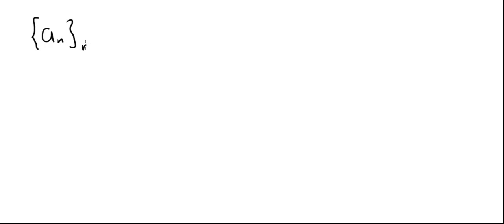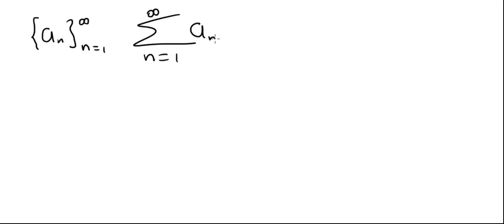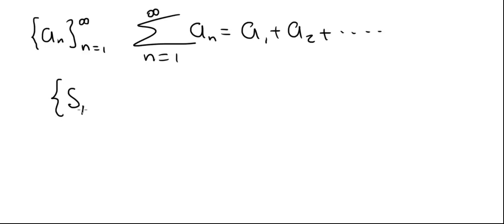We start with a sequence, we call it a sub n, starting at 1 to infinity. We then add up all the terms in this sequence: the summation from n equals 1 to infinity of a sub n, which is a1 plus a2 plus so on forever. The way we define this infinite sum is we form another sequence, we call it S sub N, the sequence of nth partial sums.